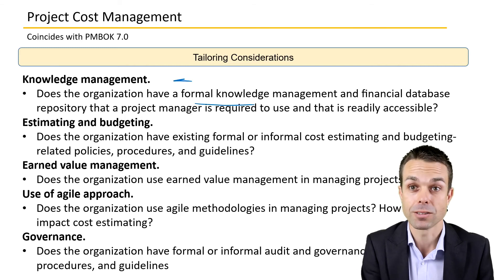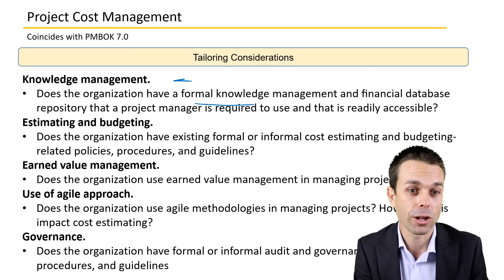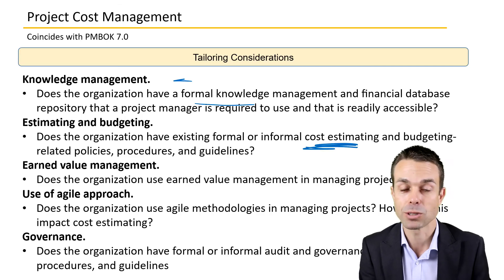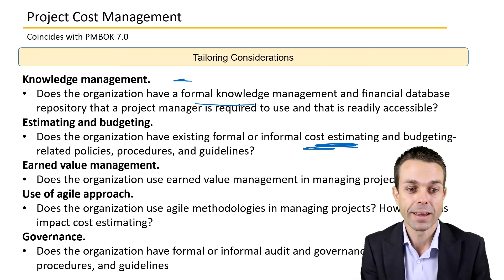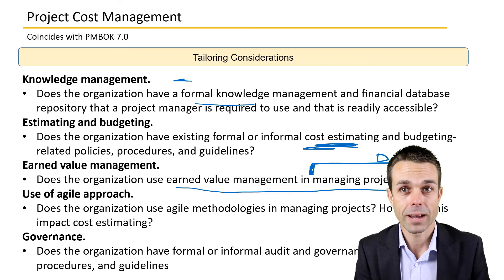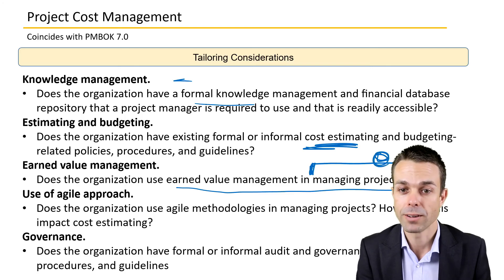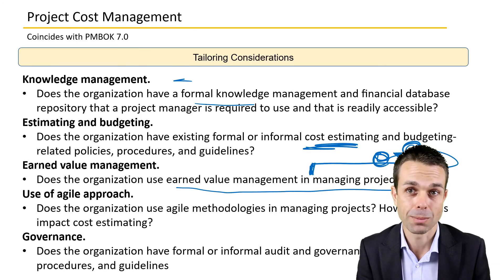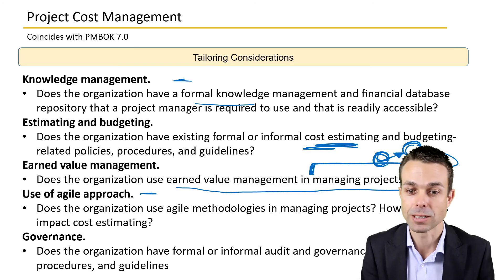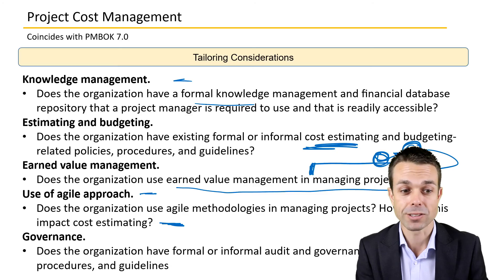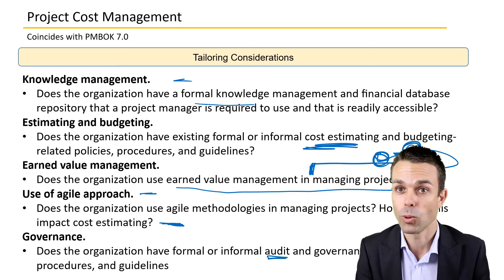Tailoring considerations for project cost management include: knowledge management — does the organization have formal knowledge management or do you need to create something yourself? Estimating and budgeting — does the organization have existing formal or informal cost estimating policies, procedures, or guidelines? Earned value management — does the organization use EVM, or do you need to apply it for your specific project? You'll need to know if your budget is going off track. Also consider agile approaches and how lightweight estimating techniques impact cost, plus any formal or informal audit and governance policies.